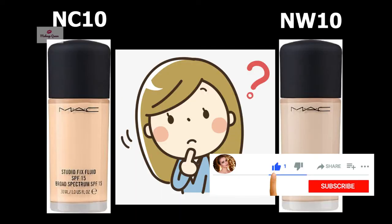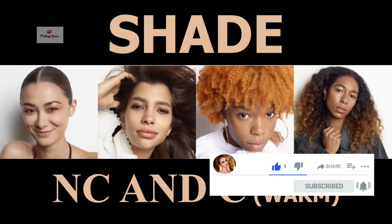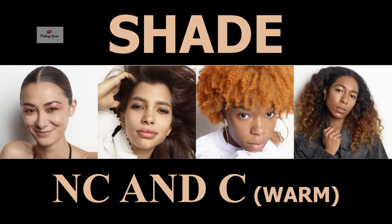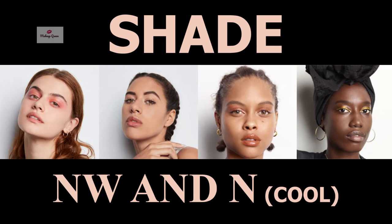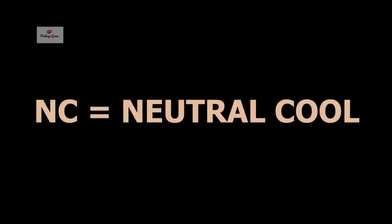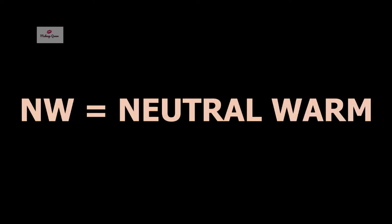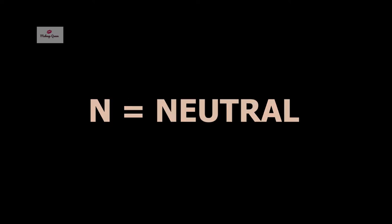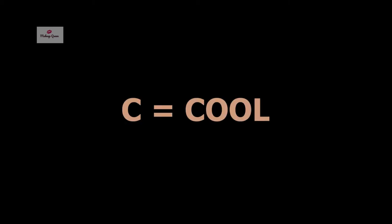MAC Foundation shades can be confusing as they have a unique numbering and lettering system. NC and C shades are considered golden or warm, whereas NW and N shades are considered rosy or cool. NC stands for neutral cool — it is for golden beige undertones. NW stands for neutral warm, which is for red, pink, or blue undertones. N stands for neutral and is for beige undertones. C stands for cool, which is for yellow, golden, or olive undertones.